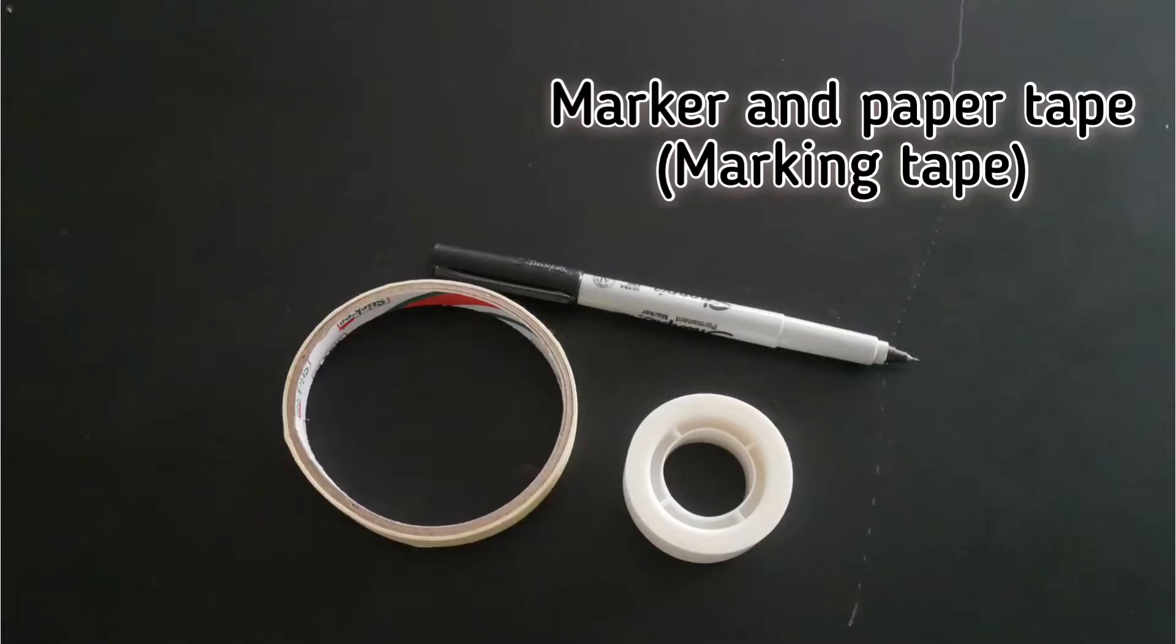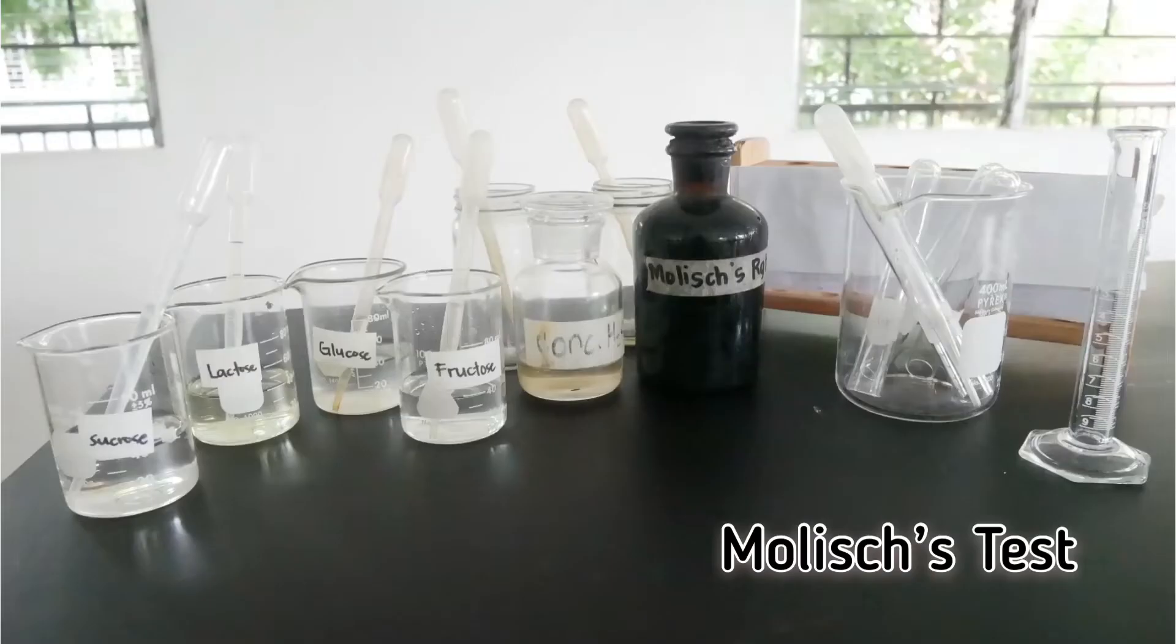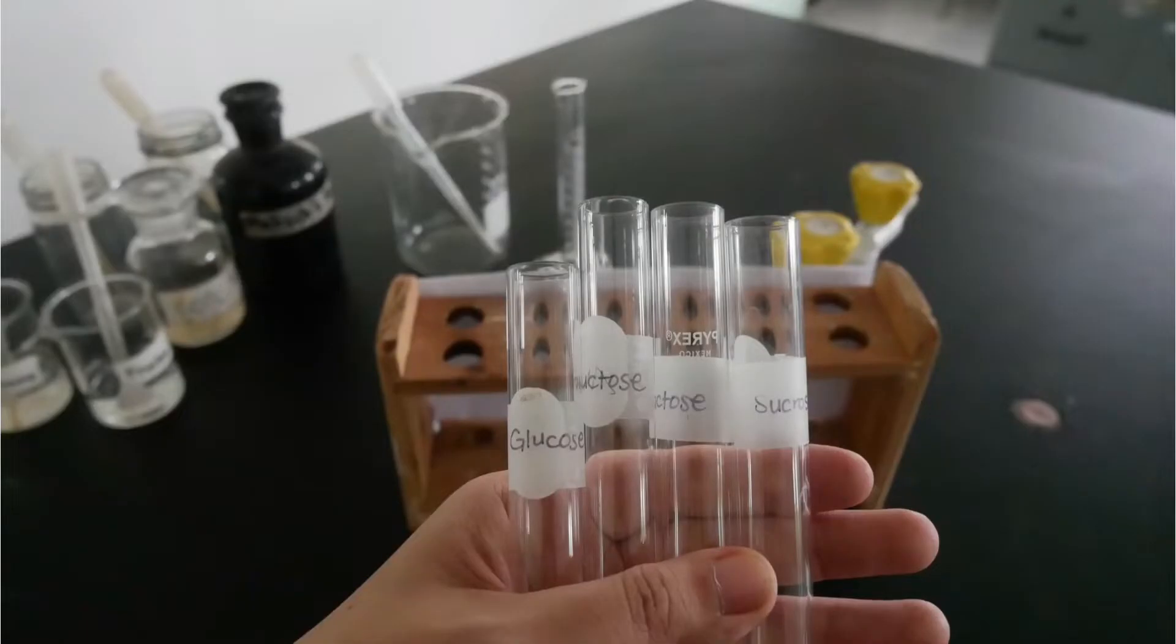For the first part of the experiment, we will be doing Molisch Test, which is a general test for carbohydrates. Concentrated sulfuric acid will also be used in this test. Make sure that you also label your test tube so that you won't get confused when transferring the carbohydrate samples.